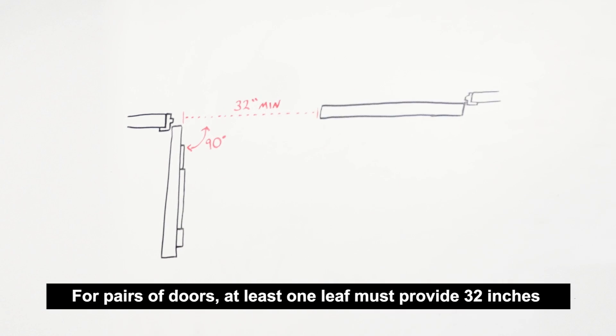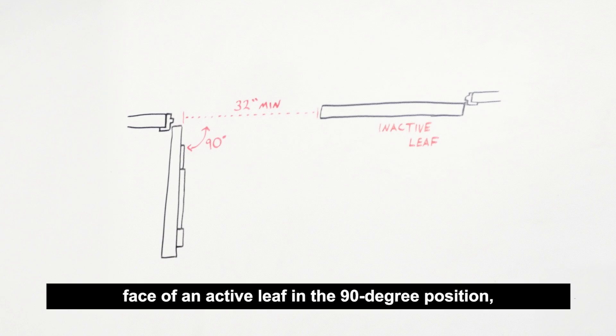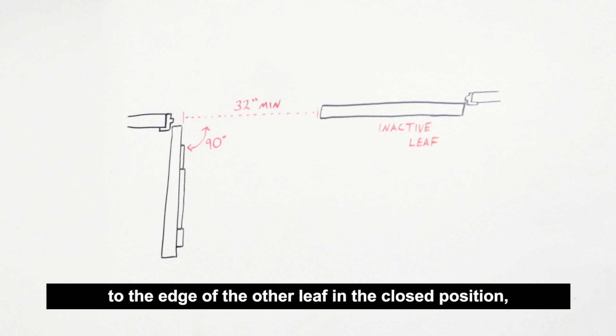For pairs of doors, at least one leaf must provide 32 inches of clear opening width minimum, measured from the face of an active leaf in the 90 degree position to the edge of the other leaf in the closed position or to the mullion.